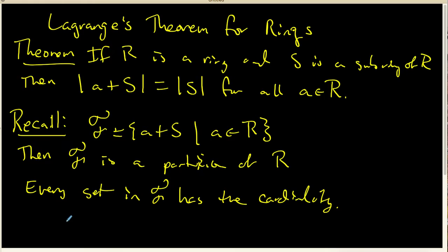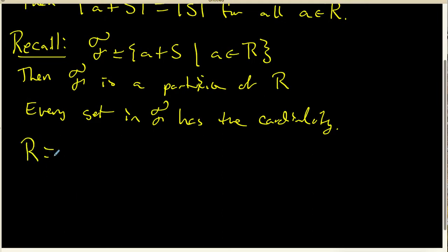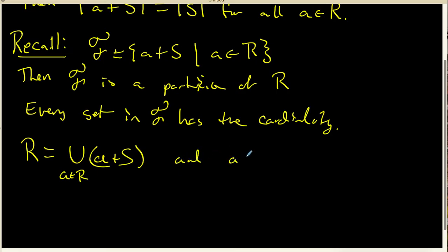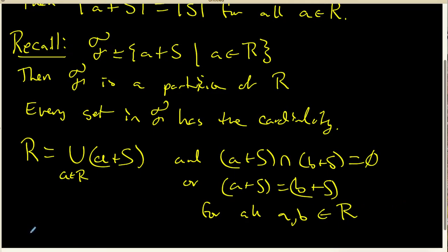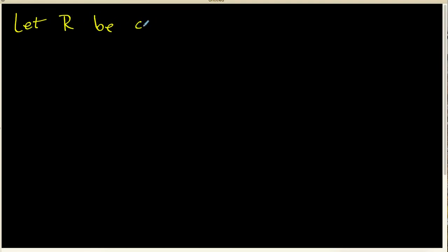What I want to remember is that a partition means something special. We know that R is the union over all elements of R of the left coset A plus S, and we know that A plus S intersect B plus S is empty, or A plus S and B plus S are exactly the same set for all choices of A and B inside our ring. Now I want to think about what goes on in the finite case.